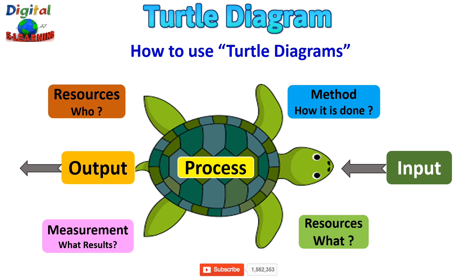Using this turtle diagram is quite simple — it is quite similar to a SIPOC diagram. The turtle diagram is made up of six areas, all surrounding the process which is considered to be the turtle body. The six areas are: input and material equipment (what you need), support process procedures and methods (how), outputs, competency skills and training (who/whom), and finally performance indicators in the form of results.